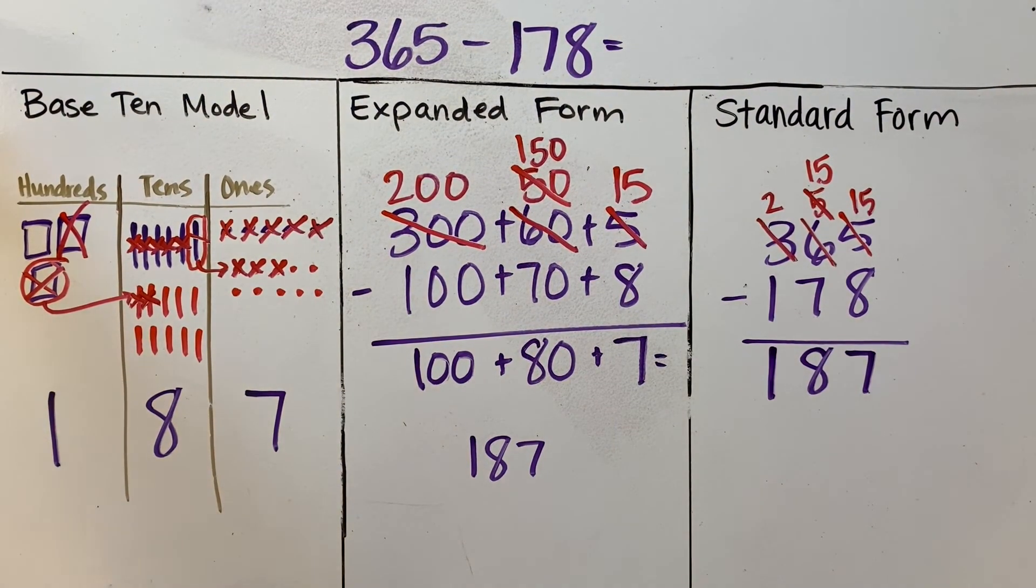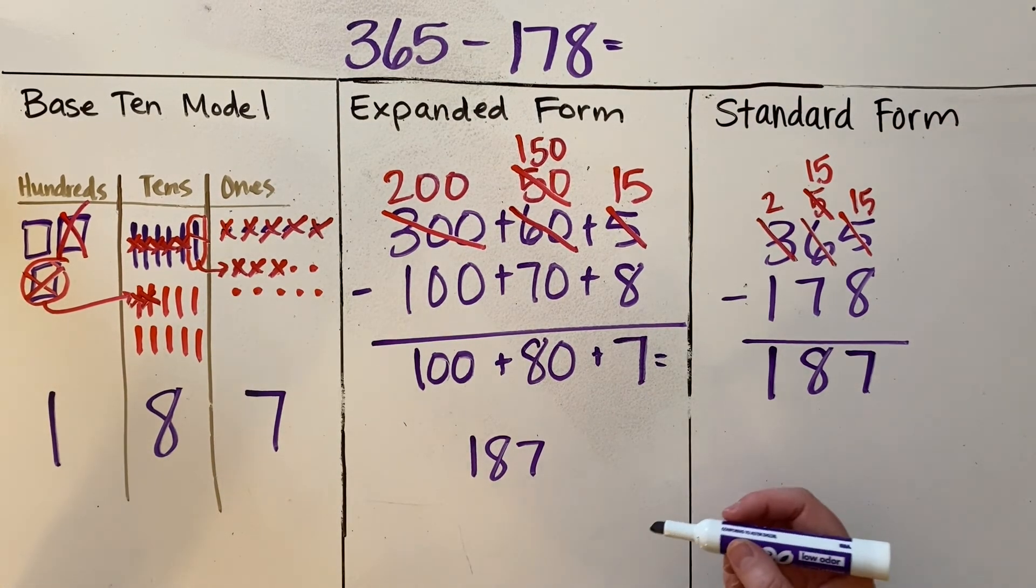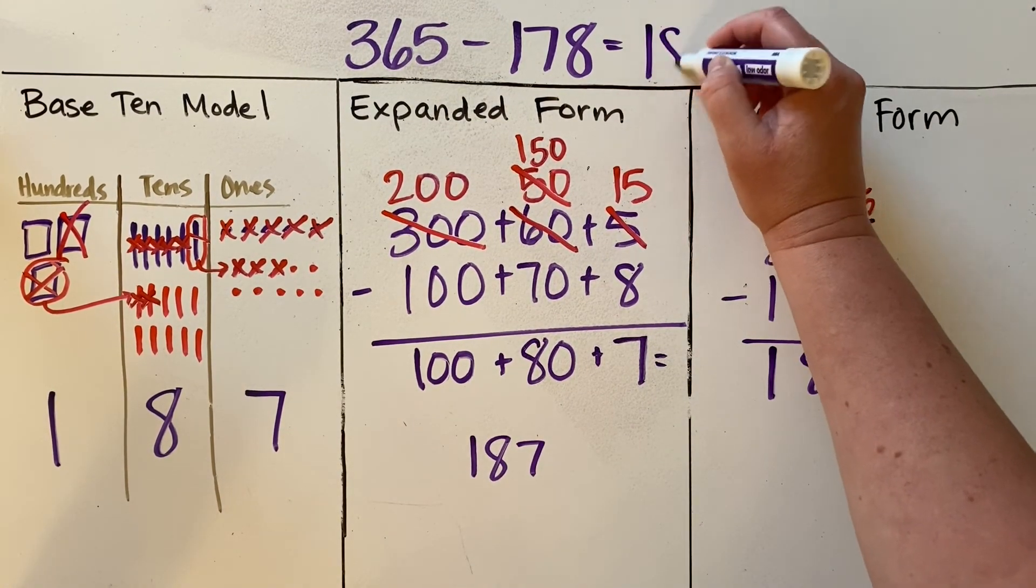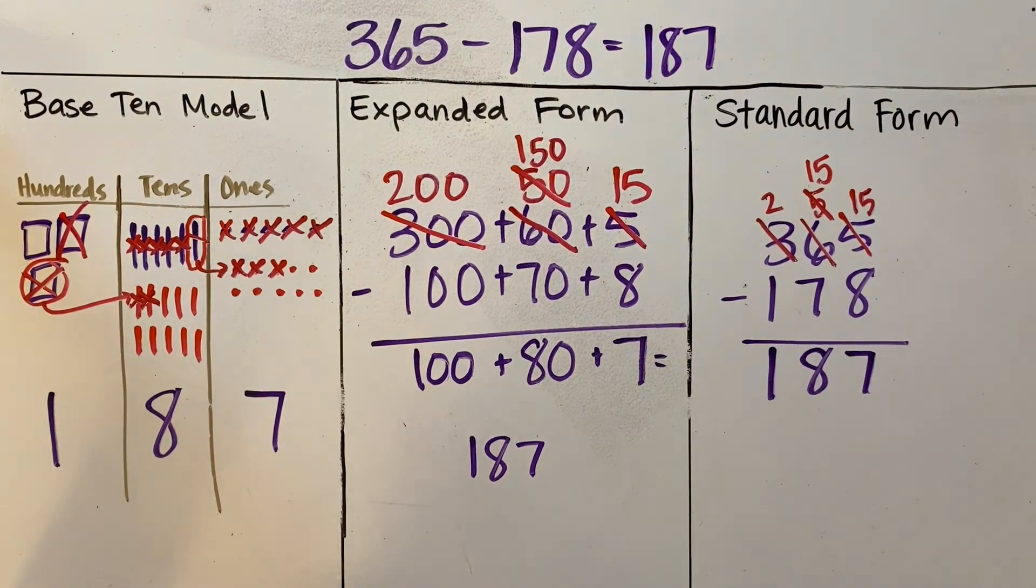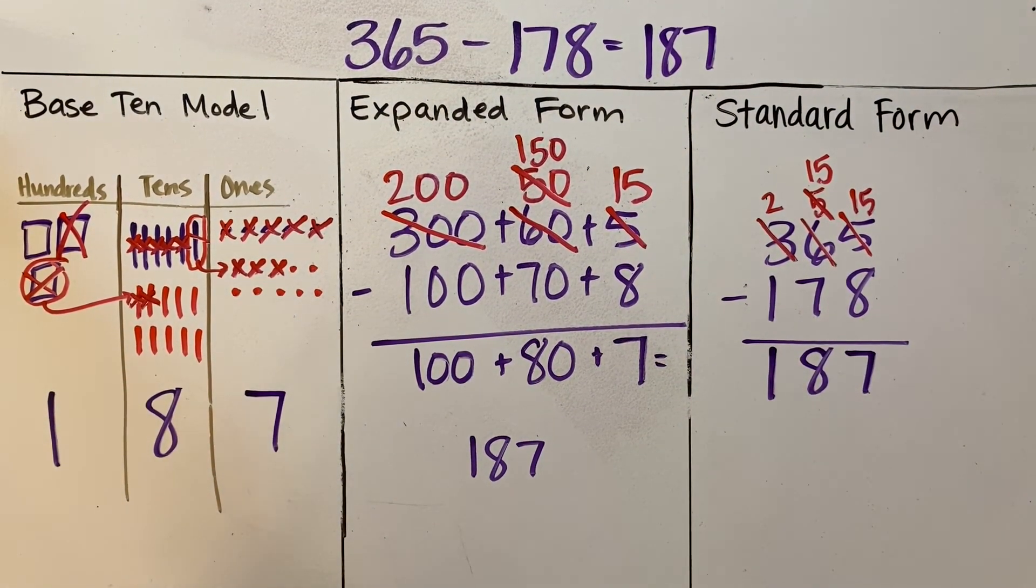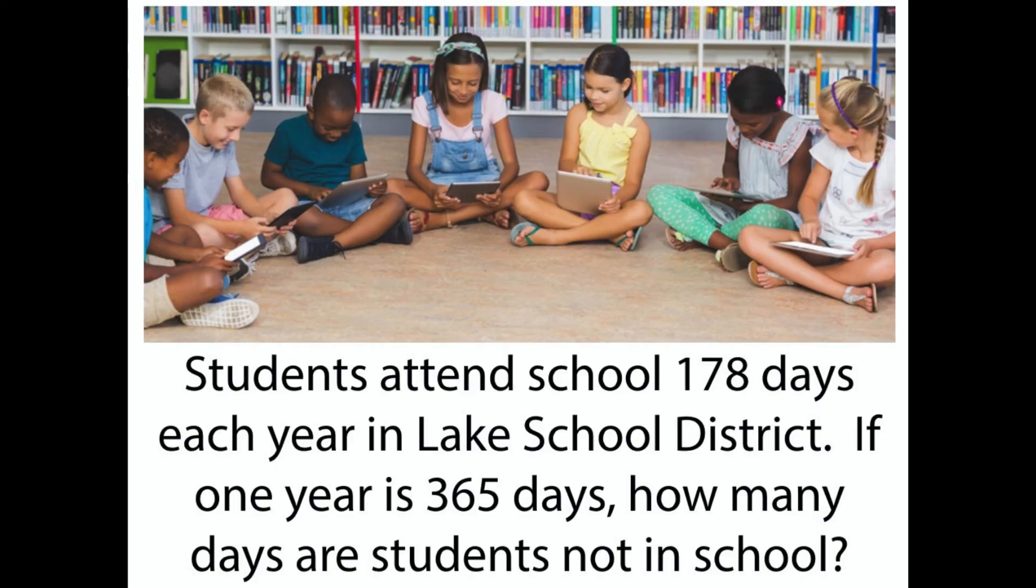On each of these, we showed that decomposing of a number if there aren't enough to be subtracted. And we showed that this problem, 365 minus 178, is 187. Back in context, if one year is 365 days, how many days are students not in school? We could answer that the students of Lake School District are not in school for 187 days during the year.